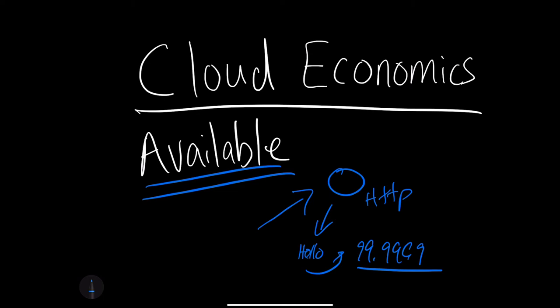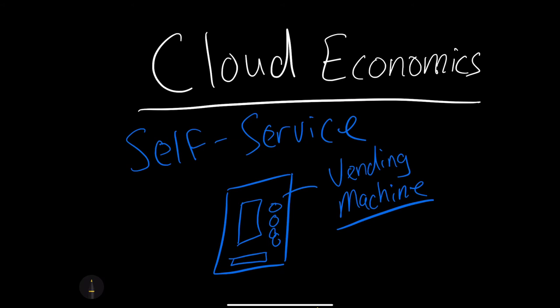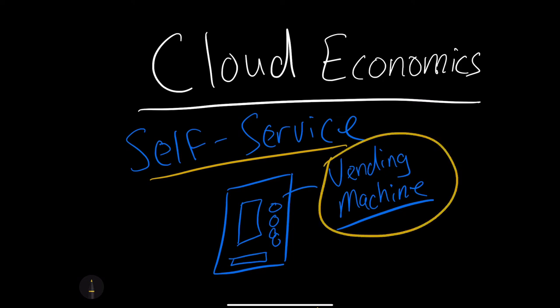Another key concept in cloud economics is the idea of self-service. Can you actually get things without going through a lengthy process of IT procurement and the bureaucracy of involving many people in a purchase? Or can you do things in a more self-service fashion? A good example of self-service is a vending machine. If you wanted a drink or a snack, you could go to a vending machine, pay, and get it right on demand. It's a little more expensive, but it solves the problem of not needing humans involved.